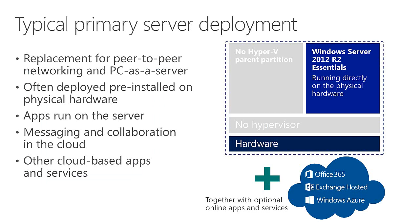Looking at the architectural diagram, the traditional physical deployment has no Hyper-V hypervisor. A lot of small businesses just install Essentials on a physical box, or it comes pre-installed from an OEM. Many small businesses get started with their first server as a replacement for peer-to-peer networking — where files are spread all over the place, backups happen ad hoc, and information protection is inconsistent.